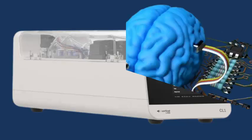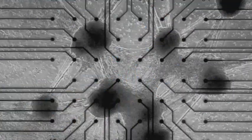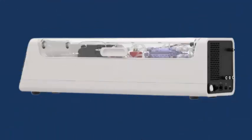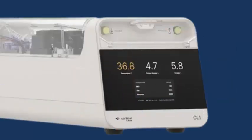This groundbreaking system integrates lab-grown human neurons with silicon-based computing to enhance artificial intelligence capabilities. The CL1 utilizes a hybrid architecture, featuring neurons cultured on a silicon chip, enabling adaptive learning and dynamic responses to electrical stimuli through synaptic connections.